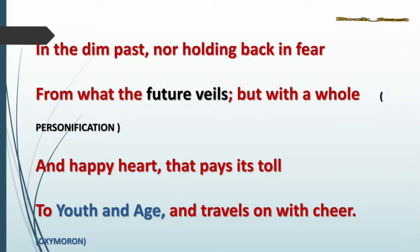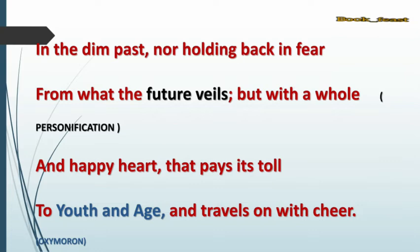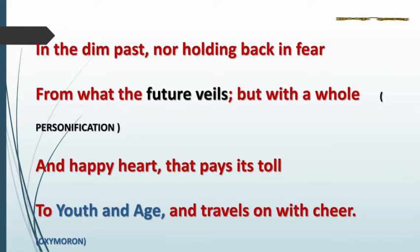'From what the future veils' — he doesn't know what his future holds. None of us can judge what the future may be. He says the same: I can't guess or know what the future is keeping for me. 'But with a whole and happy heart that plays its toll' — he will be happy facing his future whether it brings disappointment or happiness. He will carry happiness in his heart to lead his life cheerfully. 'To youth and age and travels with cheer' — from his childhood to his old age, he will make his journey a cheerful one, carrying only positive things.